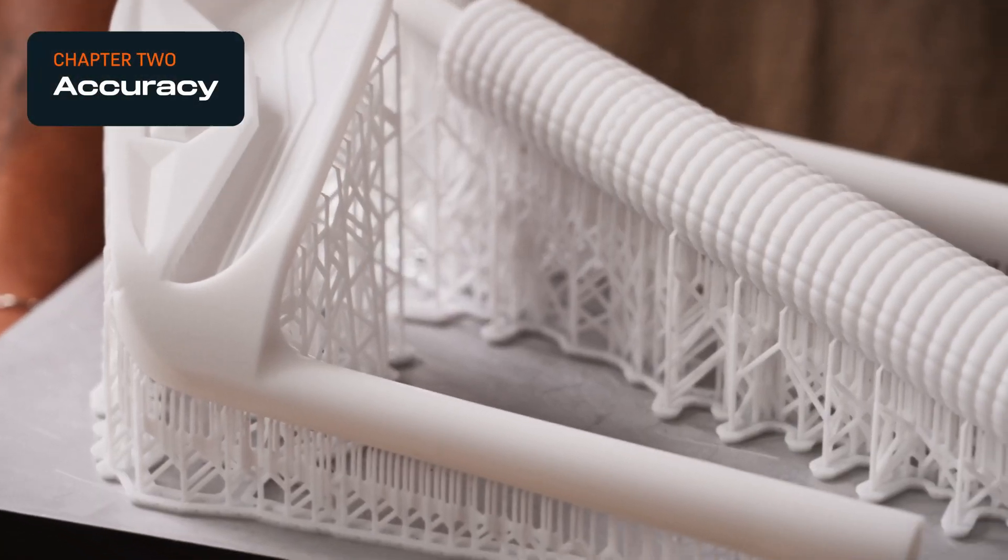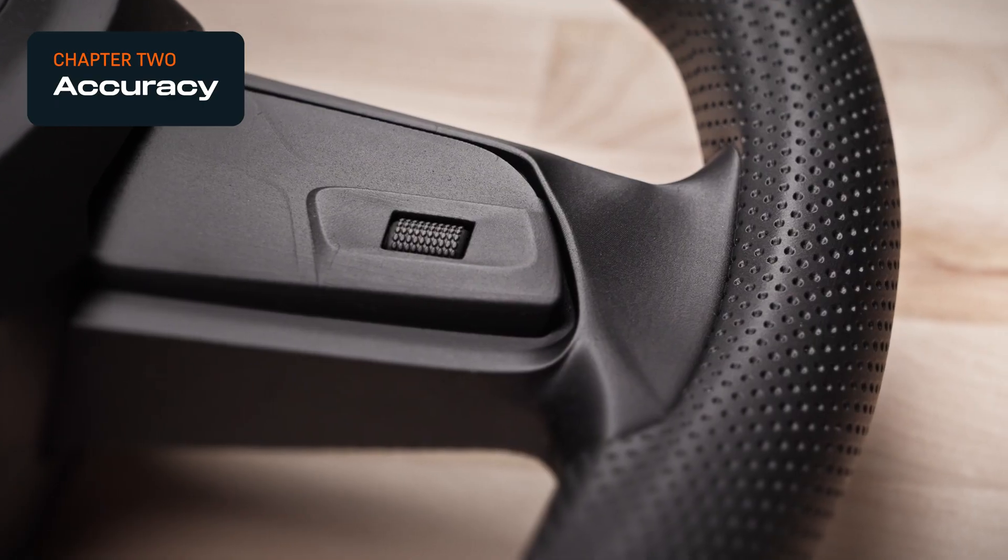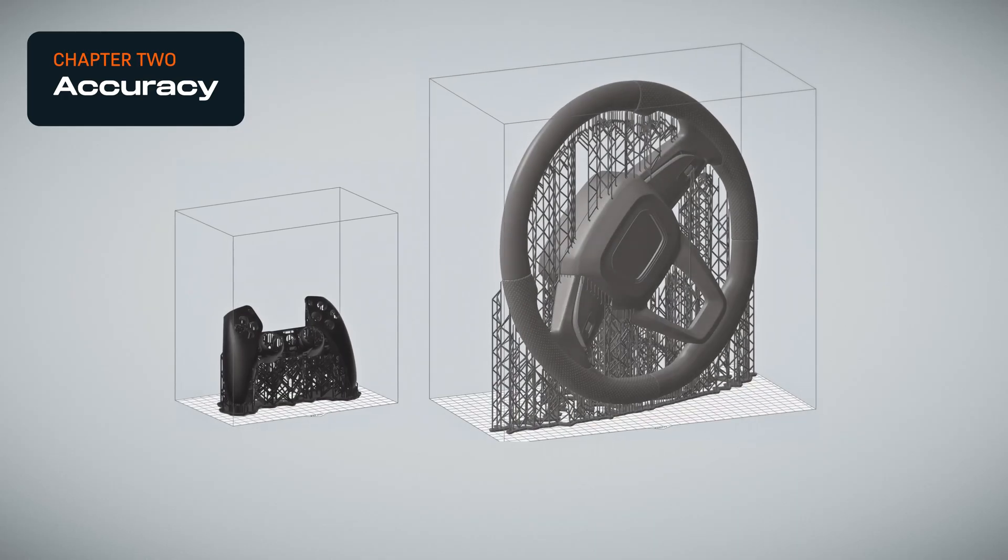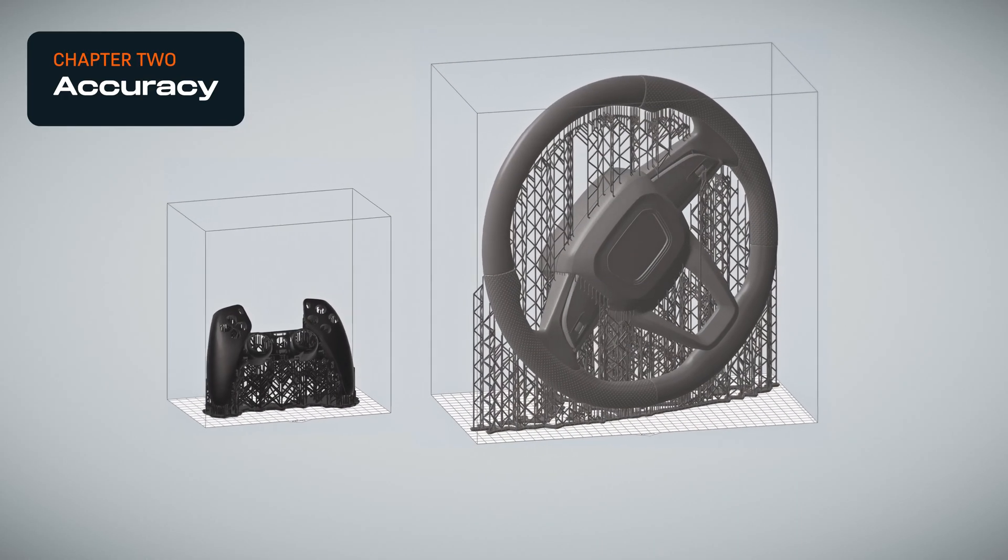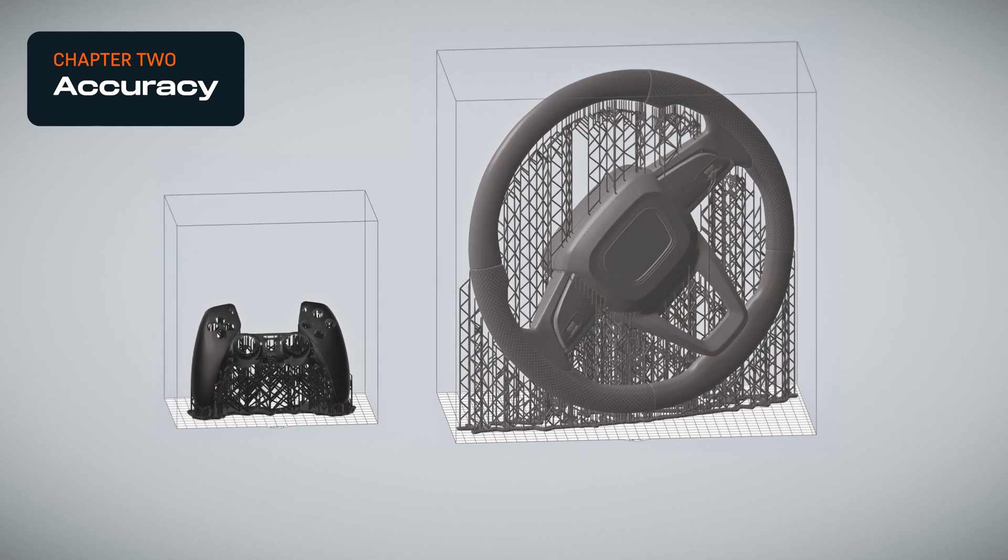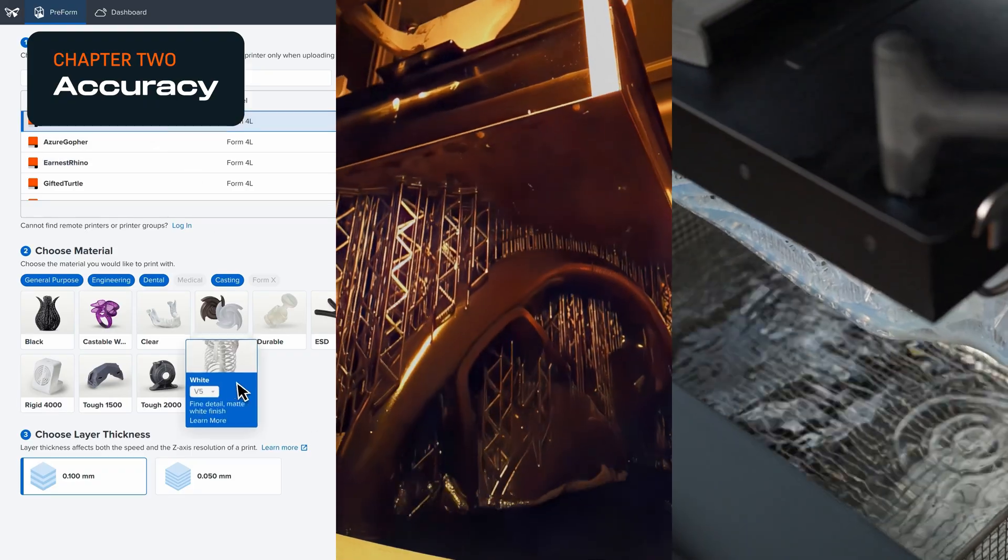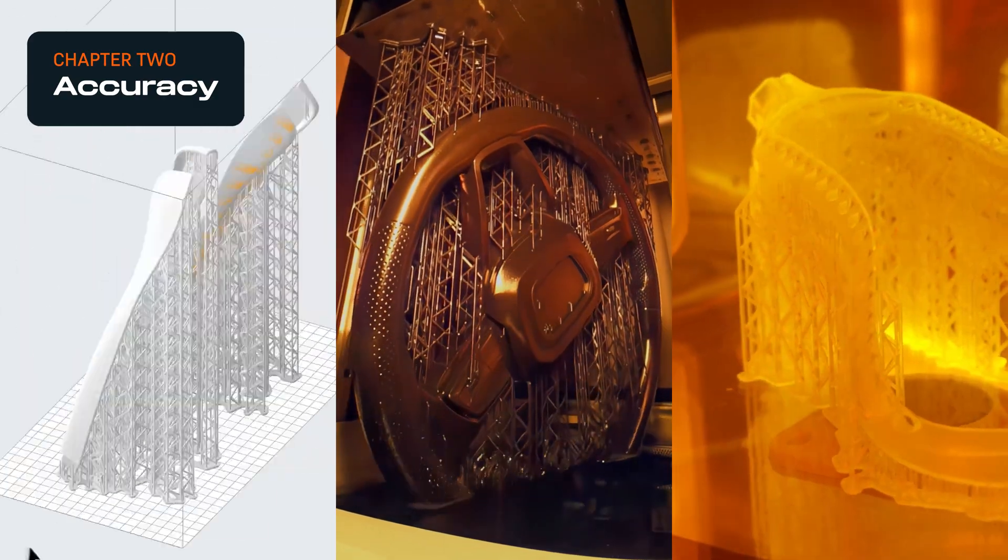Accuracy measures how closely a 3D printer can reproduce the dimensions of a digital model. For all 3D printing technologies, print settings and job setup are crucial to getting accurate parts, but the different technologies each have additional considerations.